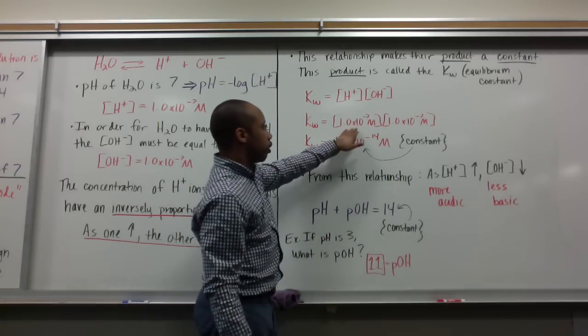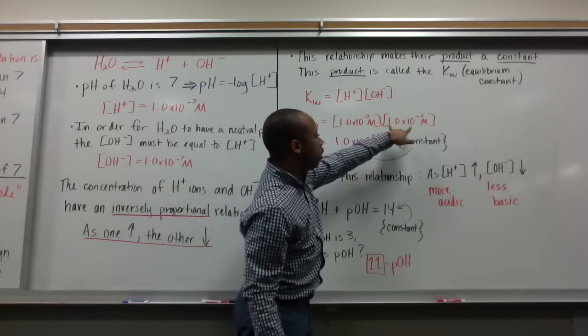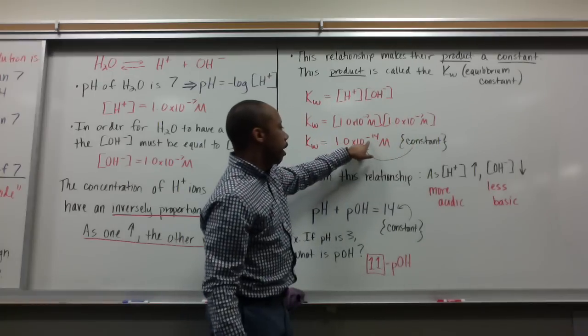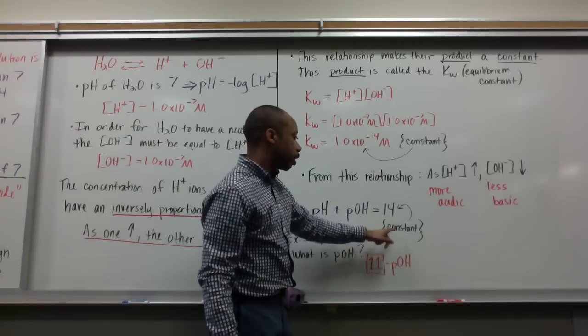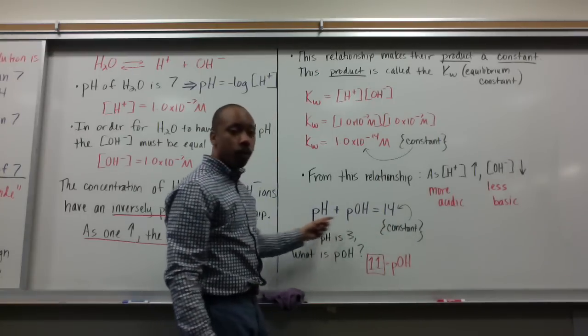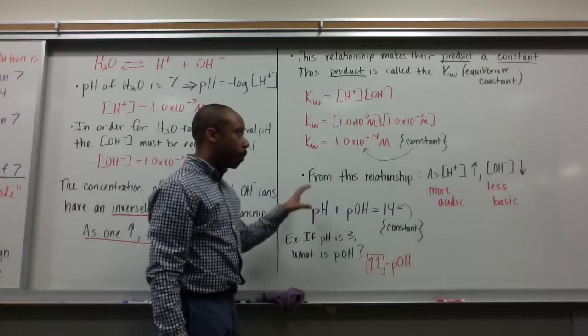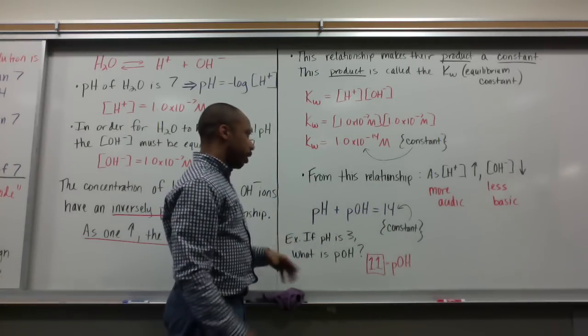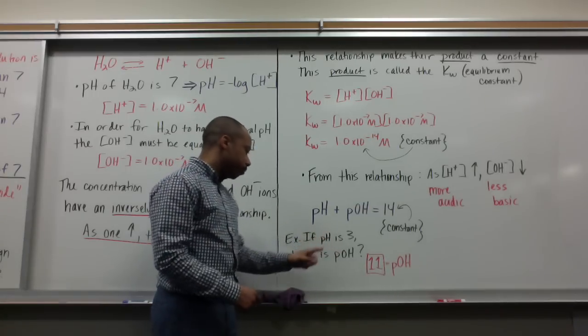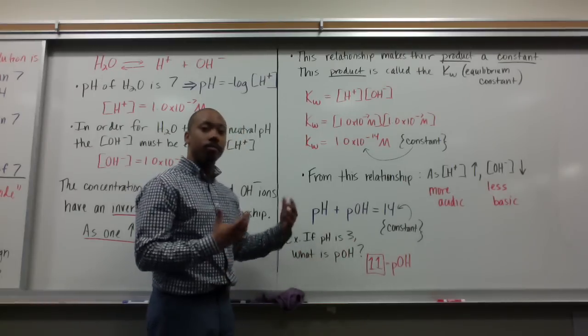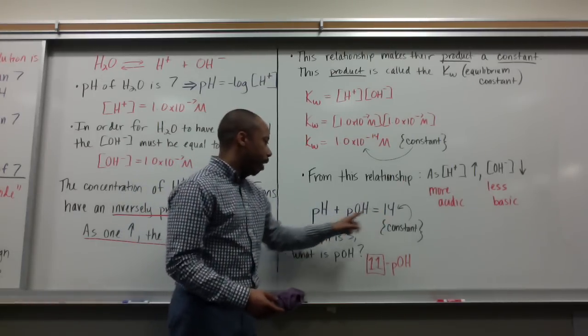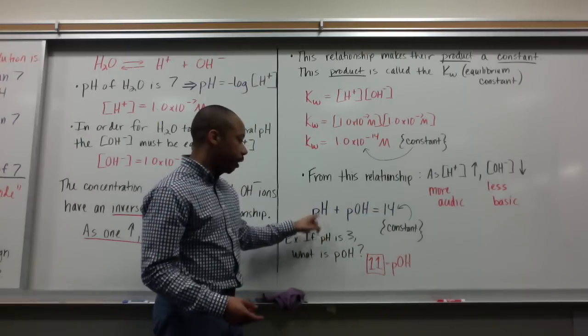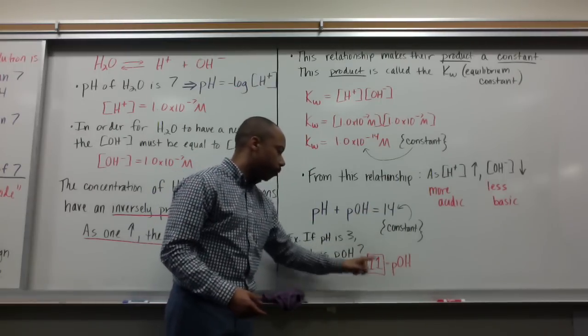Take the pH of this concentration and pOH of this concentration, and you'll get 14. This is a constant as well, an equation we'll be using to talk about this relationship. For example, if pH is 3, what is the pOH? 14 minus the pH of 3, giving you a pOH of 11.